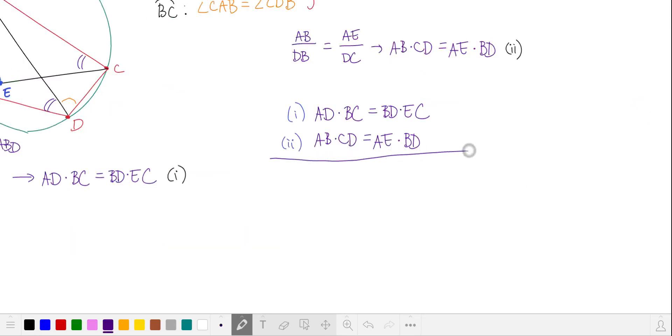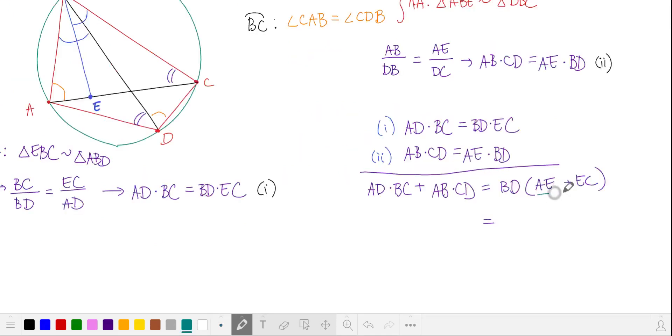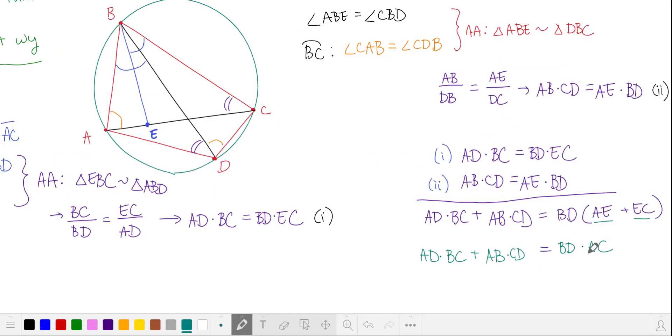Now we'll add these two equations. We'll factor BD from the right-hand side. AE plus EC, that's just this diagonal AC. And we have what we set out to prove. This is the product of the two diagonals. And here we have the sum of the products of the opposite sides.